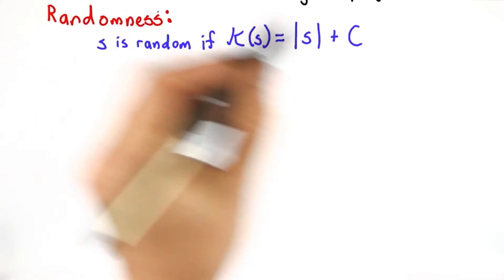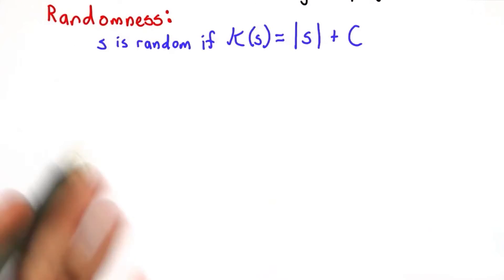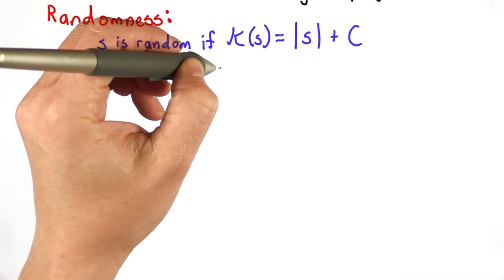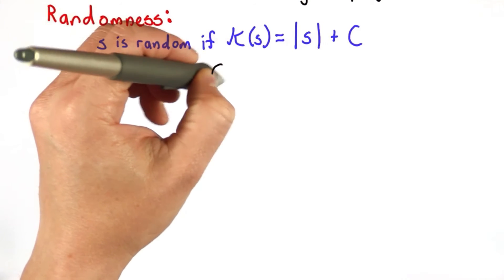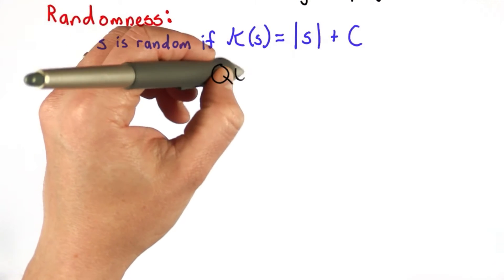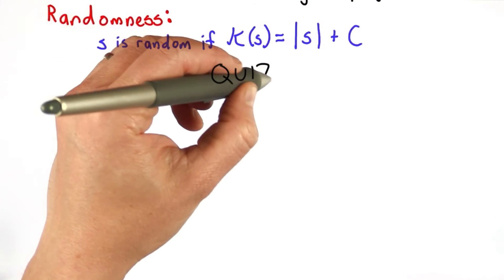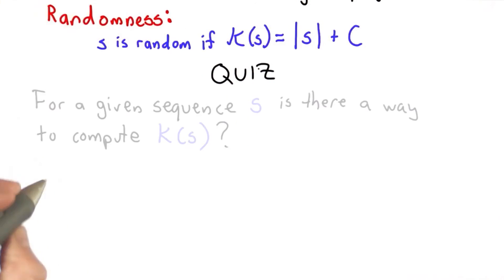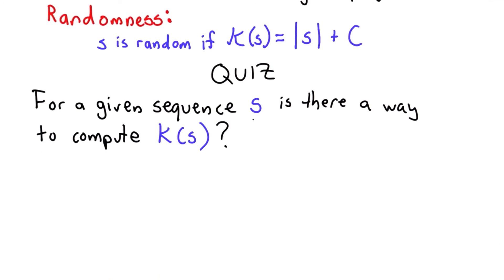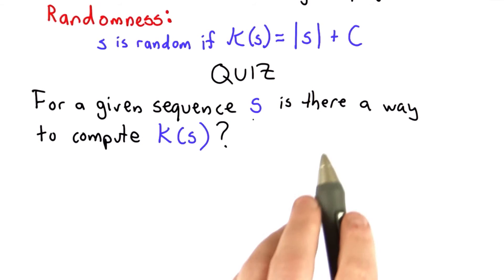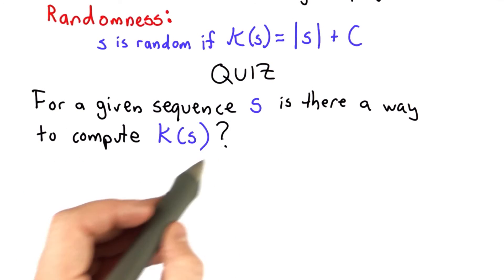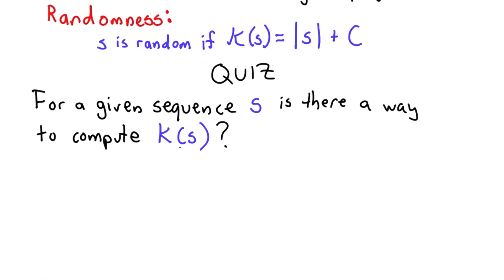This seems like a useful notion for understanding randomness. We're going to look at a quiz to see if it's a useful notion for measuring randomness. The question is: for a given sequence S, is there a way to compute the Kolmogorov complexity of S?